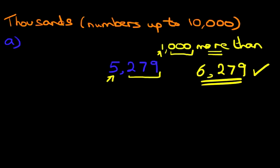Now on this side, we have the question, what is 1,000 less than 5,279? Now the first step is, we're looking at less than, so therefore we're going to be counting backwards.